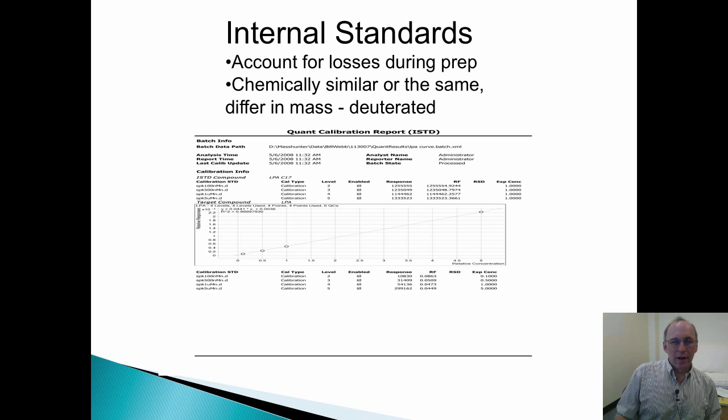So if we were going to do an external standard technique where we're only looking at area under the curve as proportional to concentration, in this slide the y-axis would be area and the x-axis is concentration, these losses would result in us reporting an artificially low number.